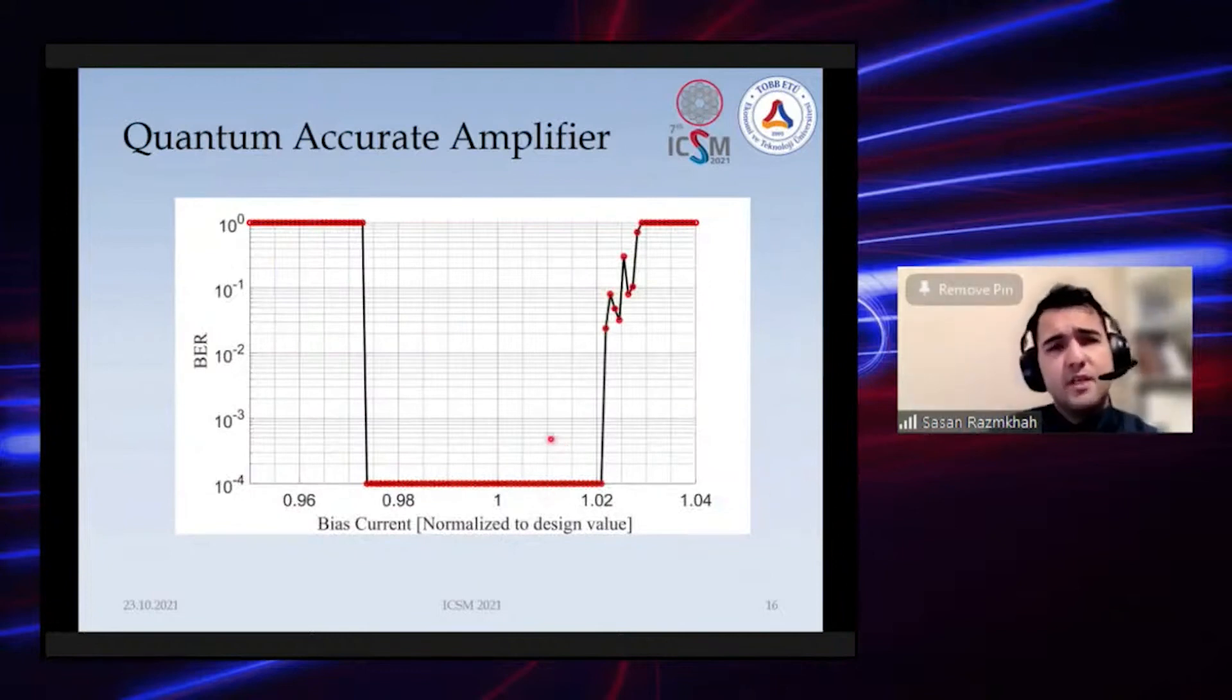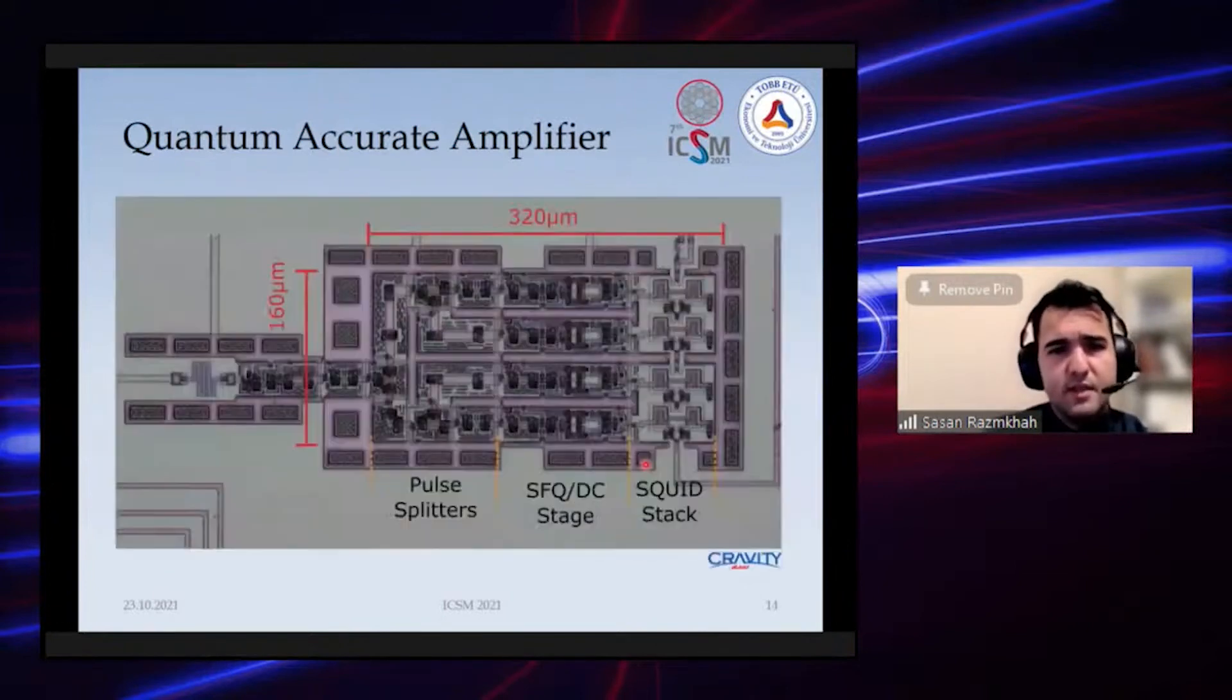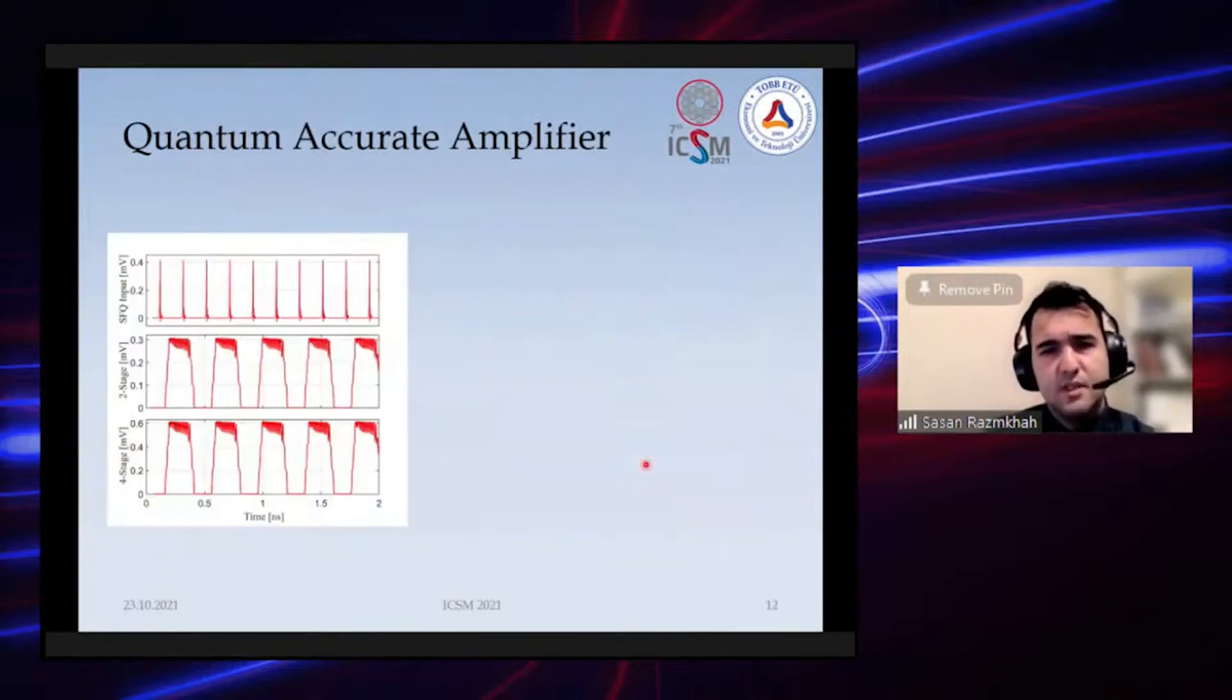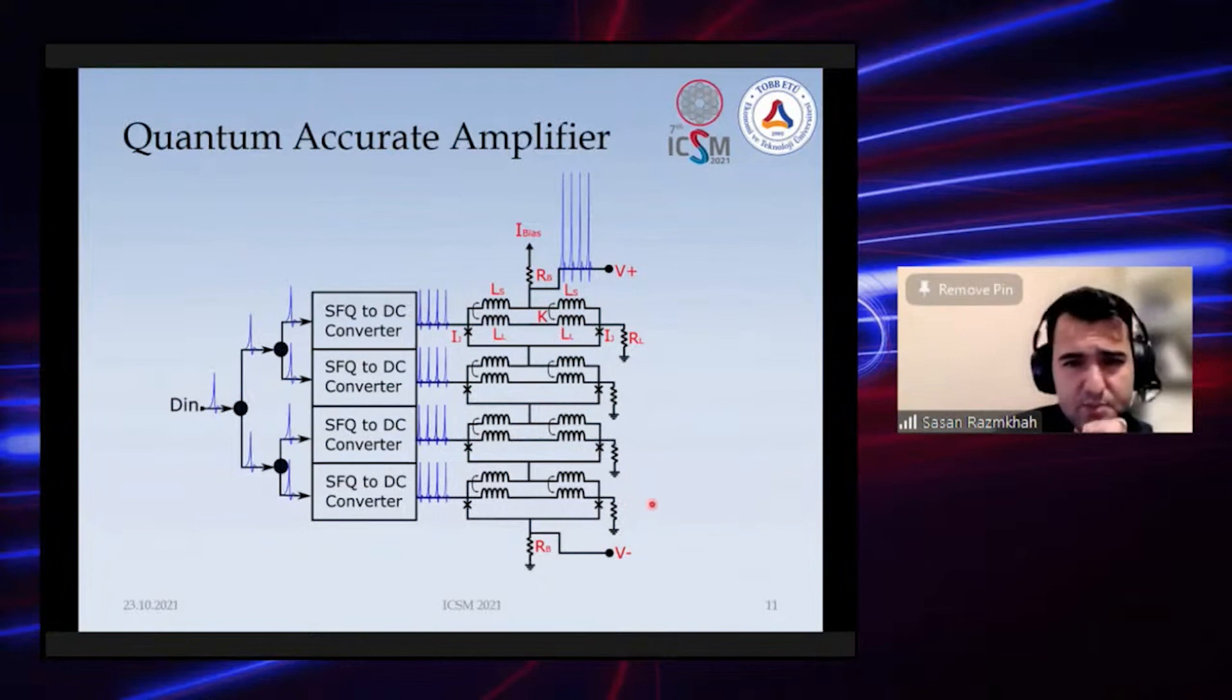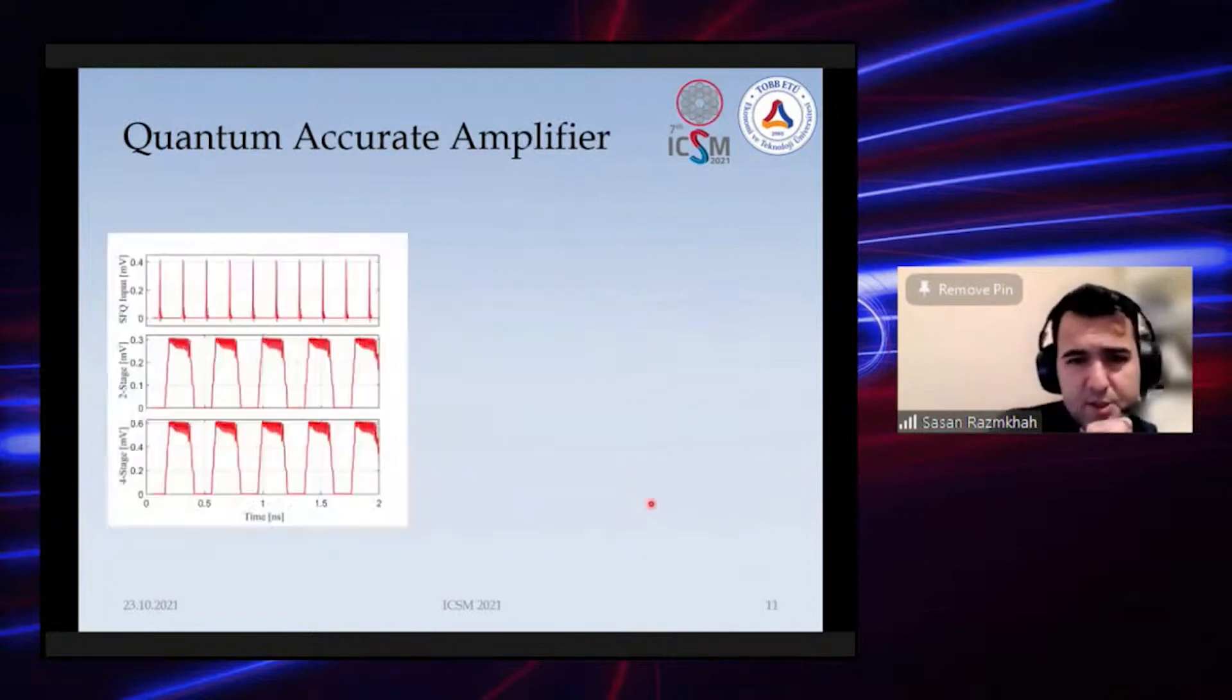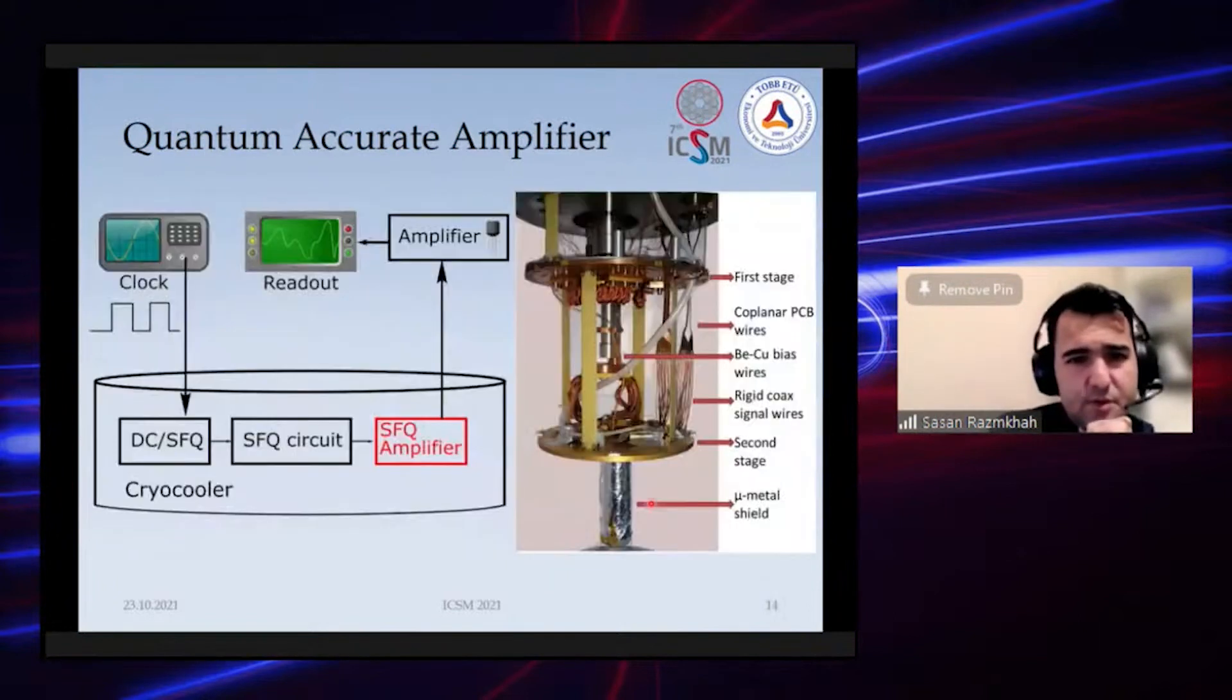We also calculate the bit error rate of these amplifiers. These are the simulations of the bit error rate based on the bias that we give to the SQUIDs. As you know, SQUIDs are very sensitive to the bias and outside magnetic field, so to optimize them for best work we need to make the bias margin larger.